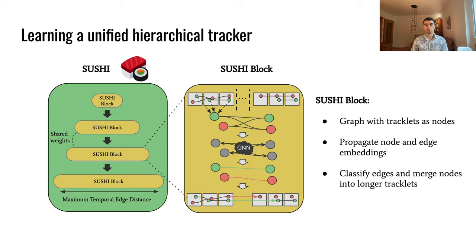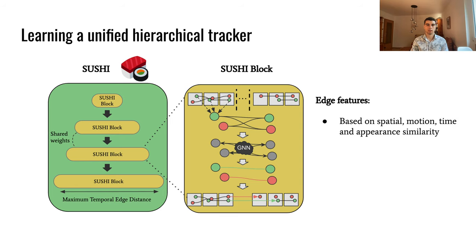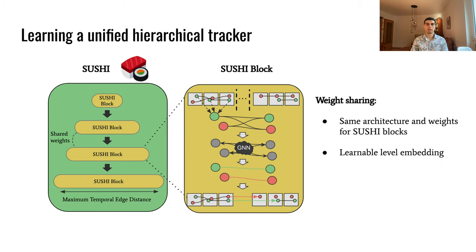SUSHI consists of a set of SUSHI blocks operating hierarchically over a set of tracklets in a video clip. Each SUSHI block considers a graph with tracklets from a subclip as nodes, applies a GNN over it, and merges nodes into longer tracks. Edge features are an extension of MPN track-to-tracklets, and are based on spatial and motion-based proximity, time distance, and re-ID embedding-based appearance similarity between nodes. Notably, all SUSHI blocks share the same GNN architecture and weights, hence making SUSHI unified across temporal scales. To do so, we additionally learn a level embedding for each level in our hierarchy, encoding the specific feature differences to be expected at each hierarchy level — for example, larger time distances or spatial displacements at higher levels.